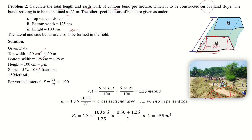Using the slope formula: slope equals vertical interval divided by horizontal interval, multiplied by 100. Substituting the slope value and horizontal interval of 25 meters, we get the vertical interval. The earthwork for the bund includes the lateral and side bund contribution: 1.3 × 100 × S divided by the vertical interval, multiplied by the cross-sectional area. Cross-sectional area equals (top width plus bottom width) divided by 2, multiplied by height.